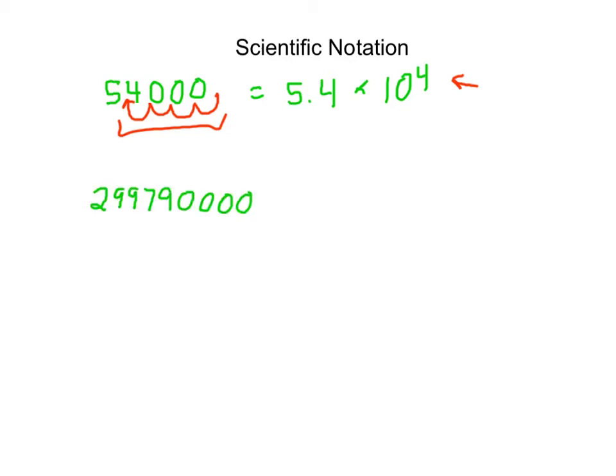Here's another example. 299,790,000 is the speed of light in a vacuum in meters per second. To write this large number in scientific notation, I'll hop my decimal 1, 2, 3, 4, 5, 6, 7, 8 hops. So 8 hops gives me an exponent of 8.